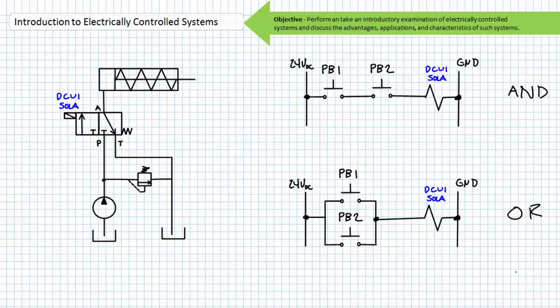If the first system needed to be modified to have the functionality of the second system, it would necessitate the physical rewiring of pushbutton 1 and pushbutton 2. If this was one of many such systems, imagine the sheer volume of tedious labor it would necessitate — unscrewing, removing, rerouting, and reattaching all those wires. This is the major advantage of a PLC. The PLC is a ruggedized industrial computer that evaluates inputs and issues outputs based on a programmable instruction set. It would still require the same two inputs and one output, but the programmable instruction set requires no physical rewiring — only a simple reprogramming if the functionality needs to change.